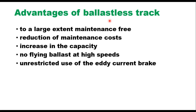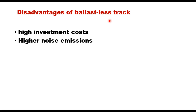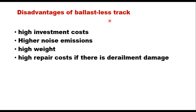In spite of all the advantages, there are a few disadvantages of ballastless track. The first is high investment cost, meaning the initial cost of construction is very high. However, when you consider the lifecycle cost of the ballastless track, it is generally lower than that of ballasted track due to significantly lower maintenance cost. Other disadvantages include high noise emissions because of the presence of the concrete slab, high weight of the structure creating more pressure on the subgrade, and high repair cost, particularly in case of derailment where the damage to ballastless track is extremely heavy, creating a very heavy burden on repair costs.